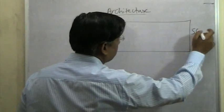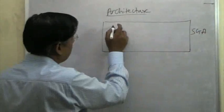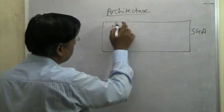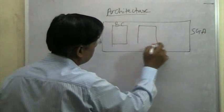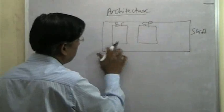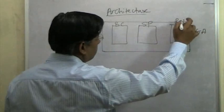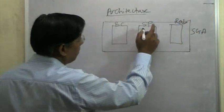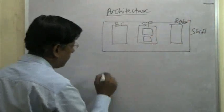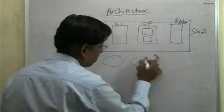This is my SGA, my buffer cache, my shared pool, my redo log buffer, my library cache, my dictionary cache. All that stuff is there. The processes are also there, those five processes.